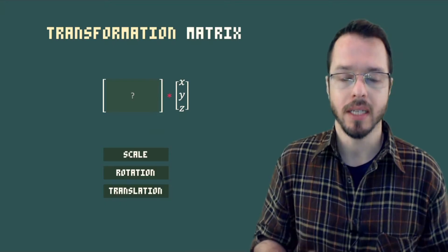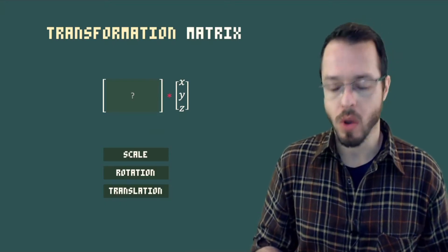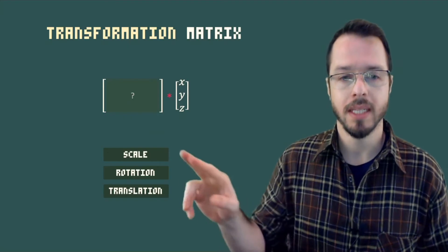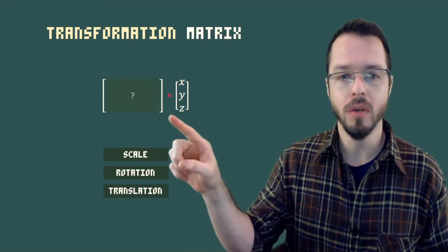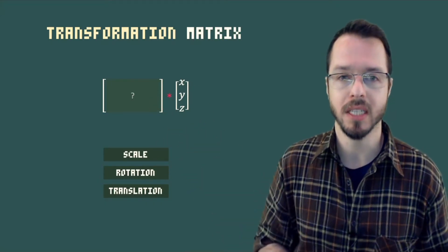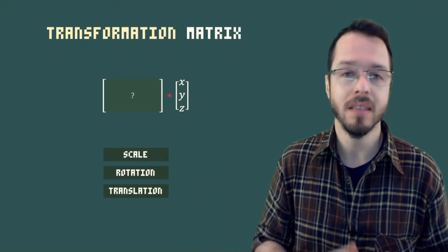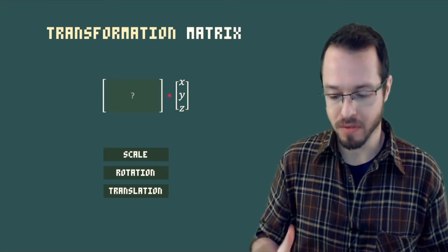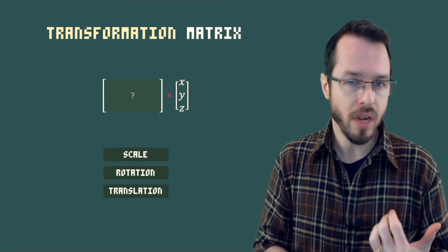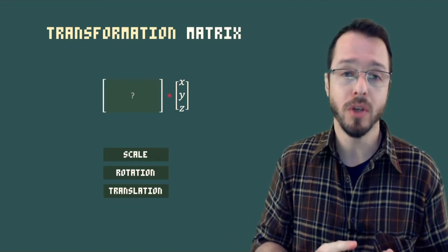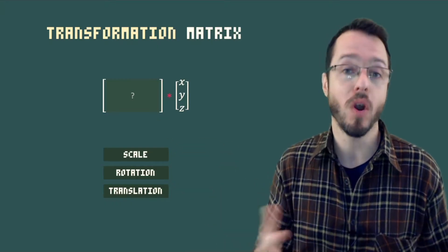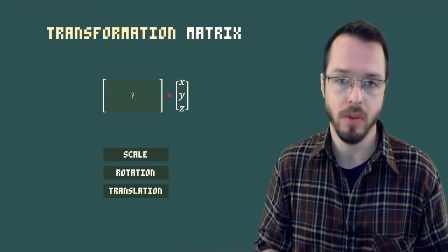All good so far? The thing is, as we also saw when coding our 3D renderer, we use a 4x4 matrix and not a 3x3 matrix when multiplying by the original vector. I recorded this video because I want to talk about the mathematical reason why we have to do that, but also to give you some visual intuition of why we need a 4x4 and not a 3x3 matrix.